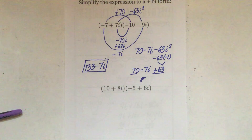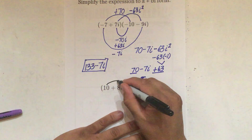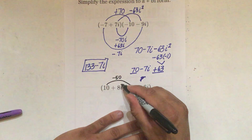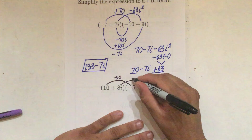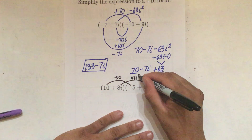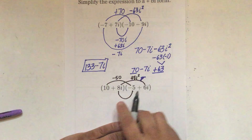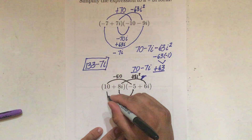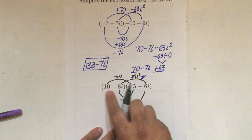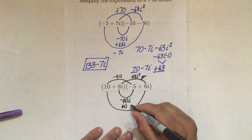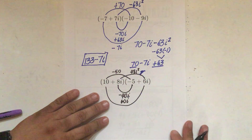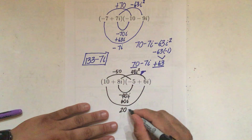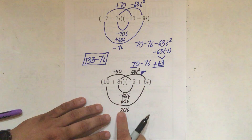Let's do another example. Left eyebrow: 10 times negative 5 is negative 50. Right eyebrow: 8i times 6i is 48i squared. Nose: 8i times negative 5 is negative 40i. Mouth: 10 times 6 — positive times positive is 60i. I combine my nose and mouth — different signs, so I subtract: 60 minus 40 is 20i. Since 60 is positive, the answer is going to be positive as well.